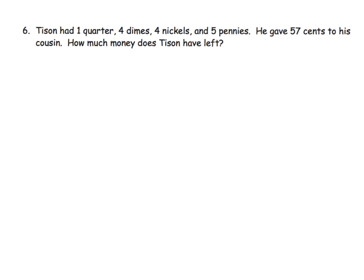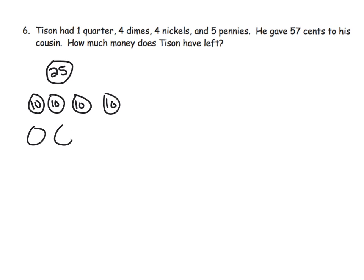The last problem: Tyson had one quarter, four dimes, four nickels, and five pennies. He gave 57 cents to his cousin. How much money does Tyson have left? So the first thing we've got to do is figure out how much money does Tyson have. He had one quarter, four dimes, four nickels, and five pennies.